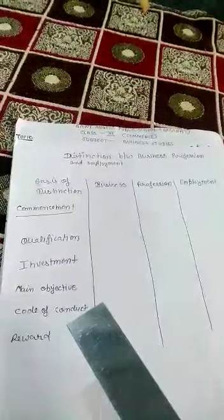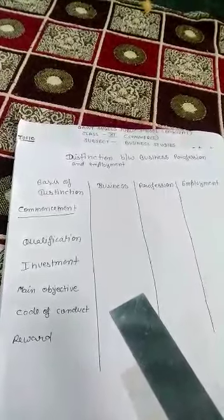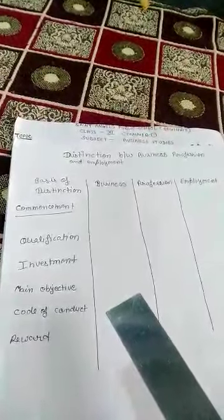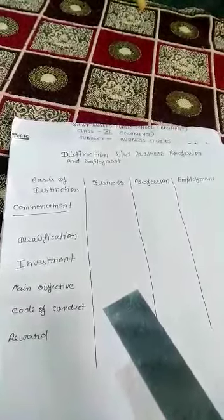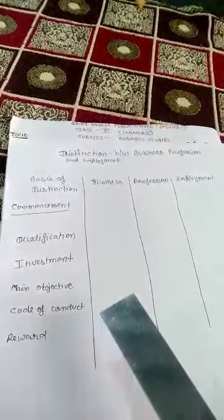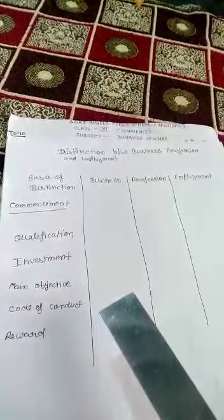Code of conduct means rules and regulations by which business, profession and employment are carried out. In business, there is no prescribed code of conduct. There is no prescribed way or set of rules for doing business. We follow simple general rules and regulations, and the business must be based on legal activities.